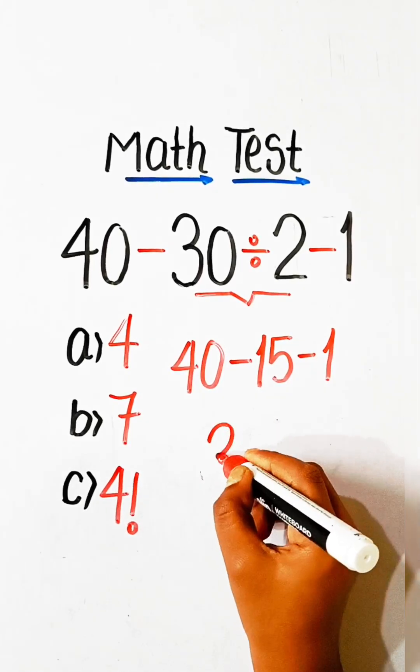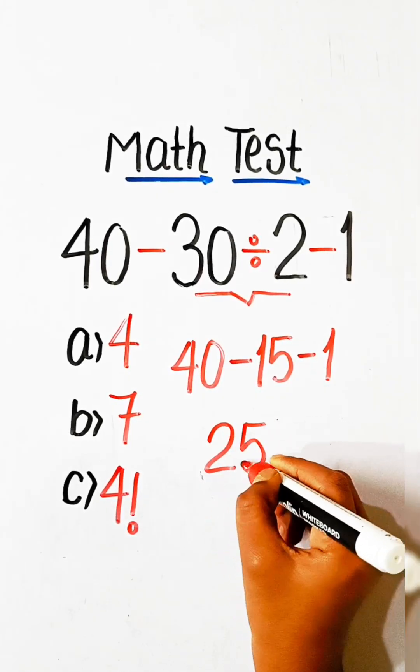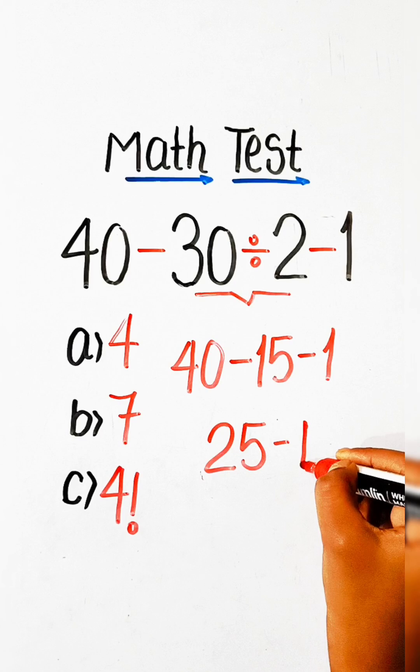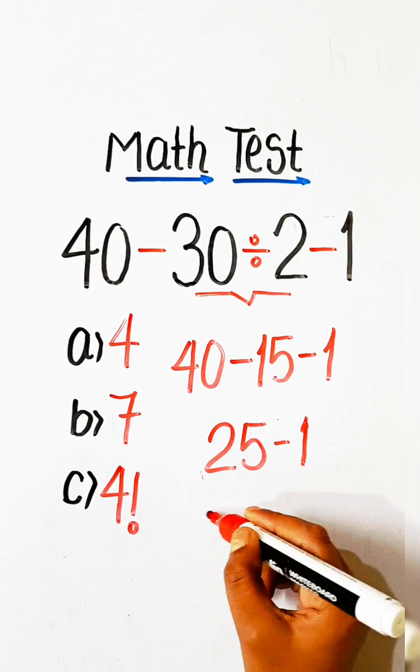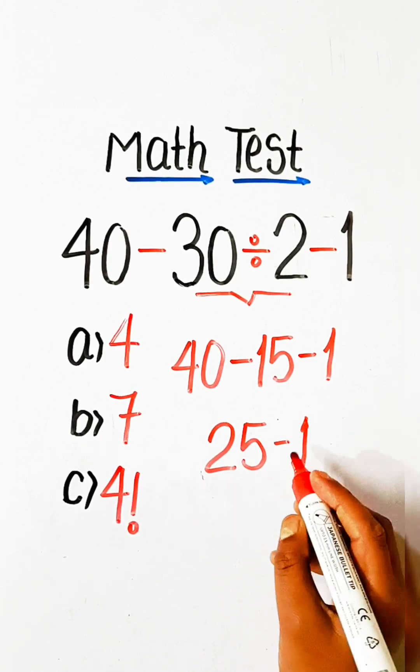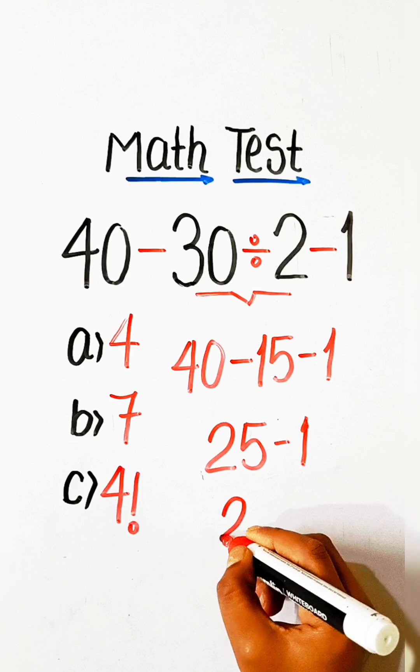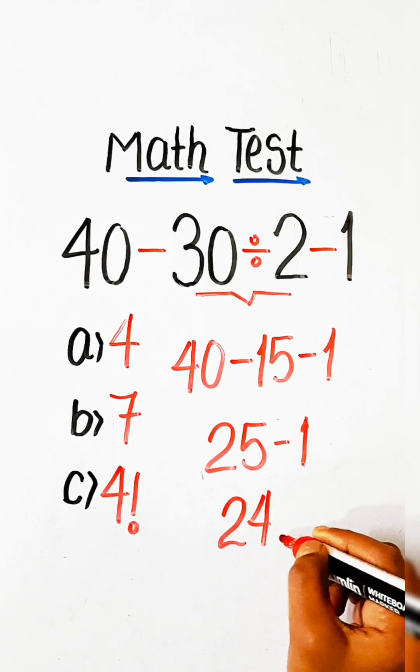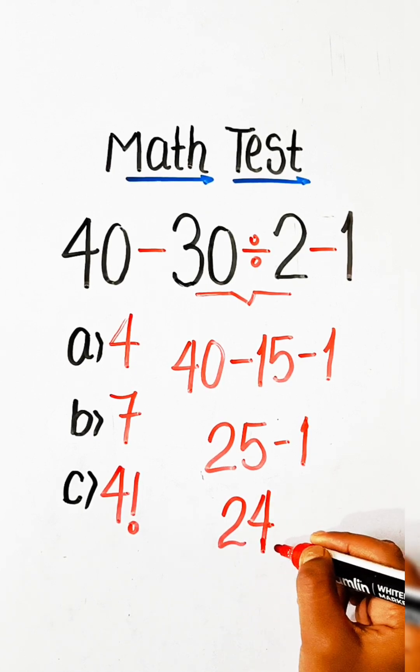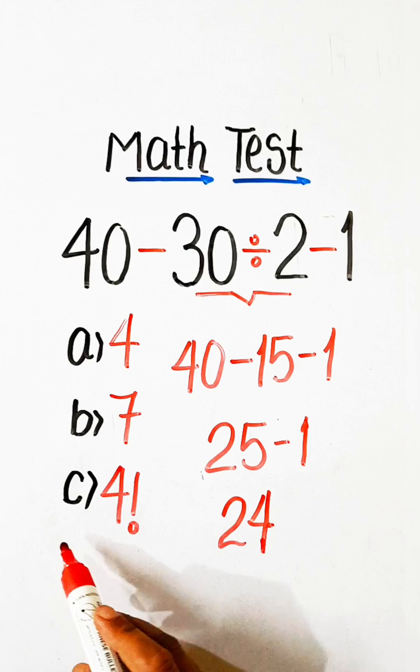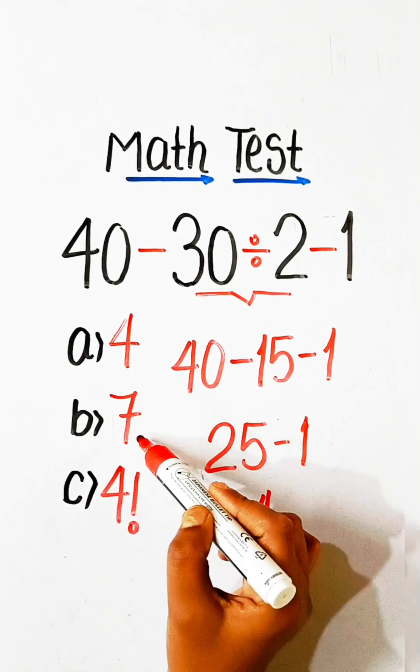40 - 15 is 25, minus 1. 25 - 1 is 24. So 24 is the correct answer, but in the options we have 4, 7, and 4 factorial.